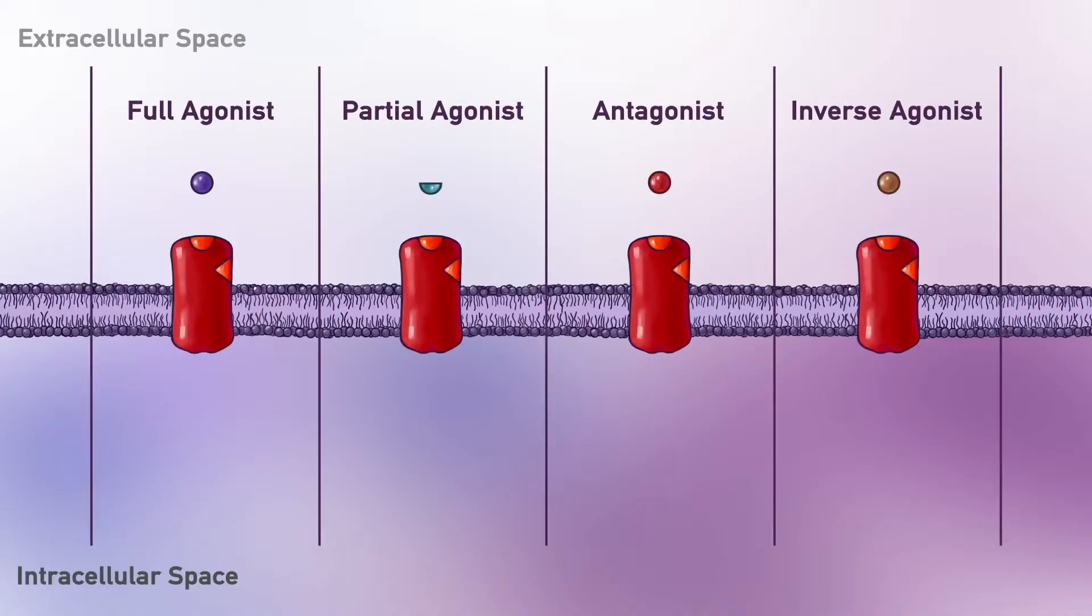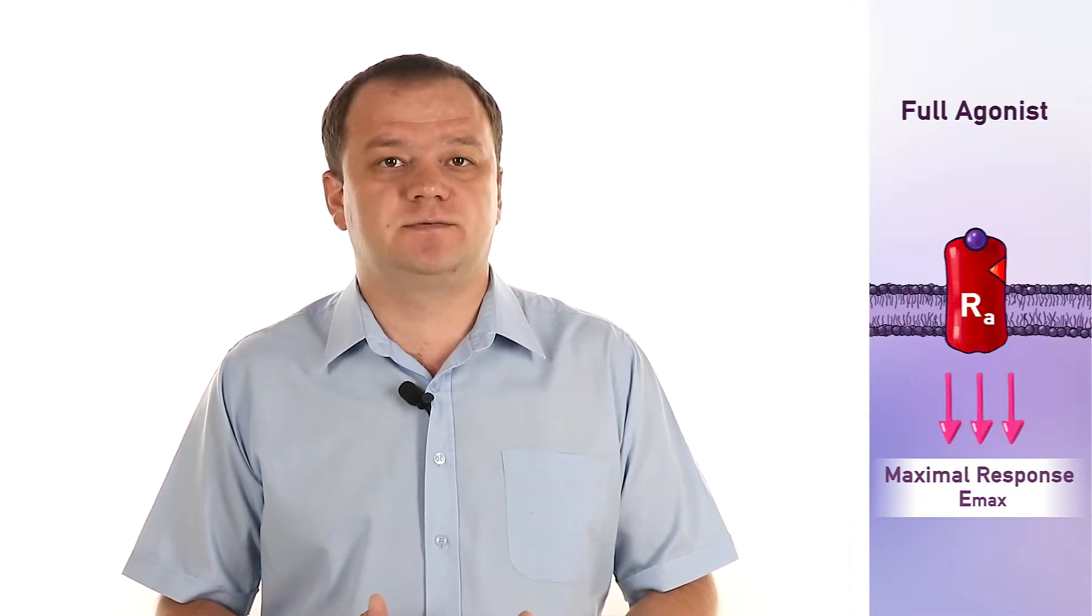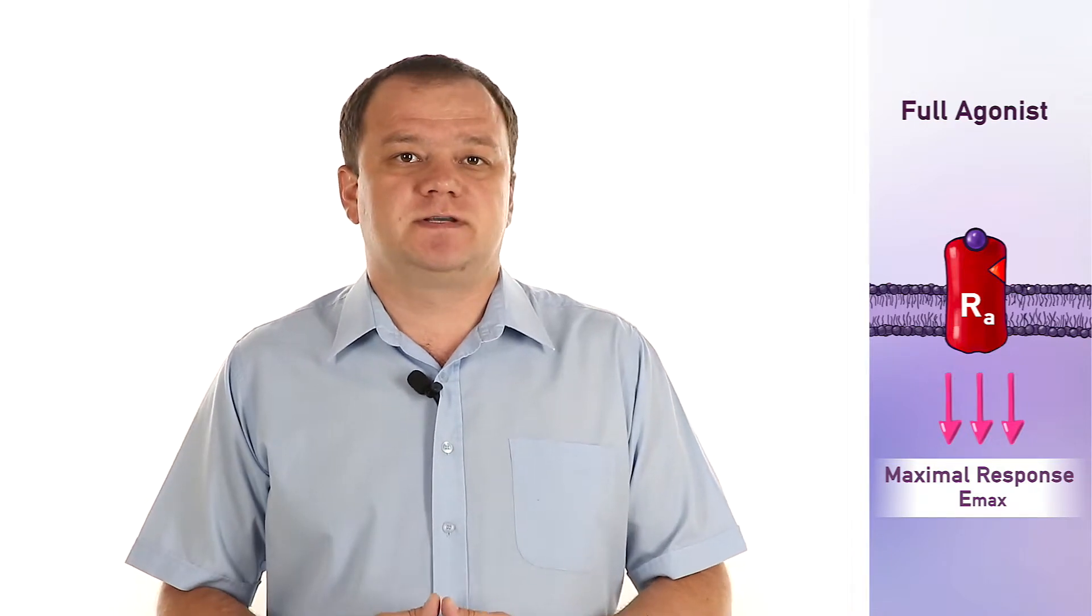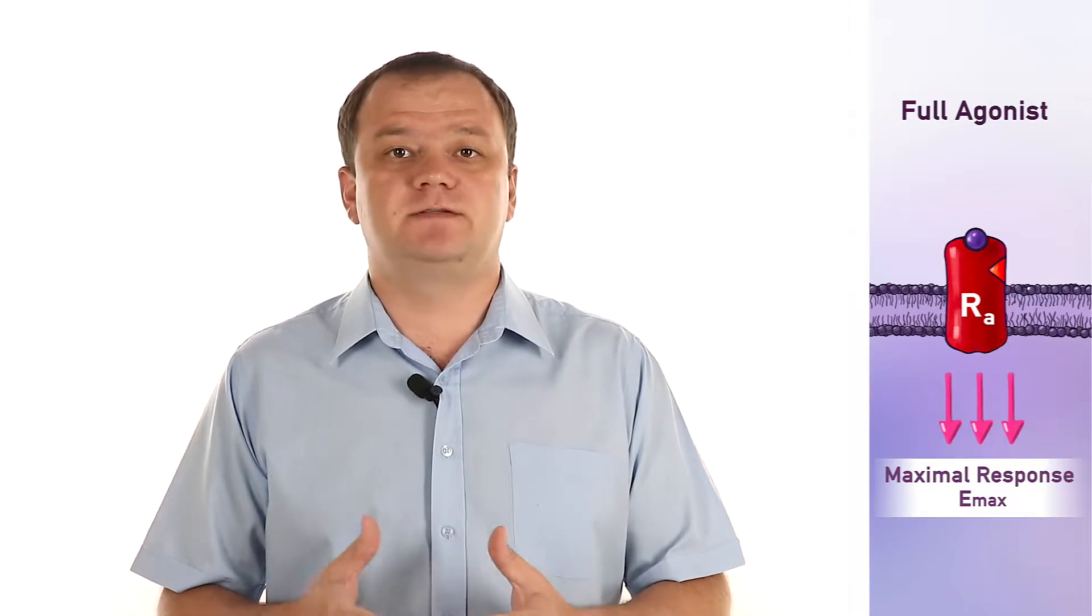The agonist or in more precise sense the full agonist molecule is a drug that increases the probability of biological response by activating or stabilizing the receptor active state, reaching 100% of response, the largest response that the tissue or cell is capable of giving. So after full agonist binding to the receptor we have stabilization of the receptor conformation in active state and reaching full response. And this full or maximum response is also called Emax.